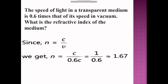Refractive index = velocity of light in vacuum ÷ velocity of light in medium. Here, the speed of light in the transparent medium is given as 0.6 times the speed of light in vacuum. So we write C ÷ 0.6C — the C cancels — giving 1 ÷ 0.6, which is approximately 1.67. So the refractive index of the medium is 1.67.